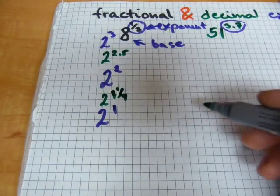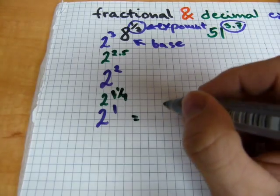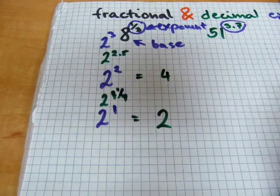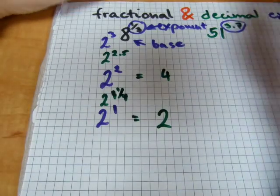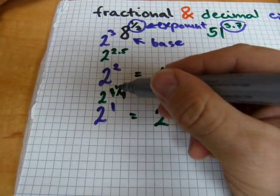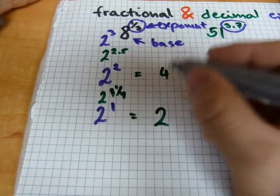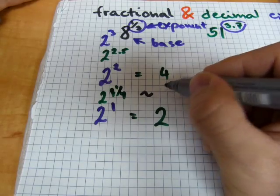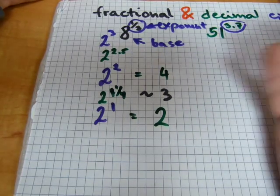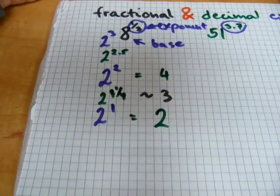If 2 to the power of 1 was 2 and 2 squared is 4, we can make a reasonable estimate that 2 to the power of 1 and a quarter will be somewhere around 3, maybe a little less than 3, something like that would be a reasonable estimate.